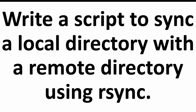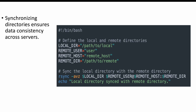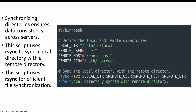The next question is: write a script to sync a local directory with a remote directory using the rsync command. If you're working with remote machines and need to consistently synchronize your local directory, this ensures data is consistent across your servers. This script uses the rsync command to synchronize a local directory with a remote directory. We give the local directory path, the remote user, remote host, and remote directory path, then use rsync with the appropriate arguments — local directory and destination — to perform efficient file synchronization.